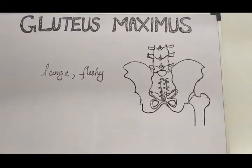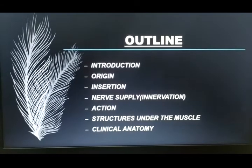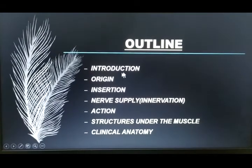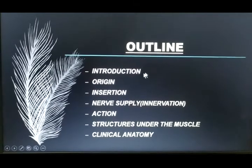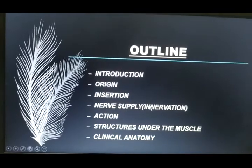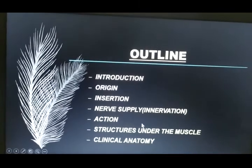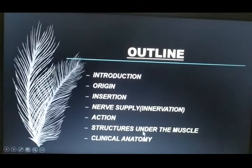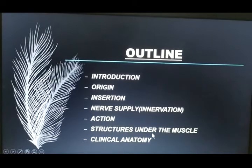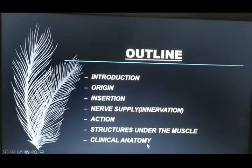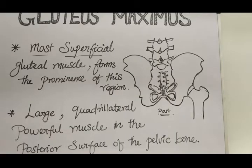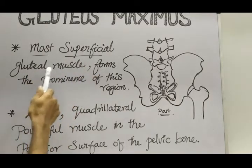Here is the outline of what we are going to see. We'll cover the introduction of the gluteus maximus muscle, then move on to origin, insertion, nerve supply, and action — that is, the function of this muscle. Then we'll see the structures under this muscle, and finally we'll end with some clinical notes. This is the most superficial gluteal muscle, which forms the prominence of the region.